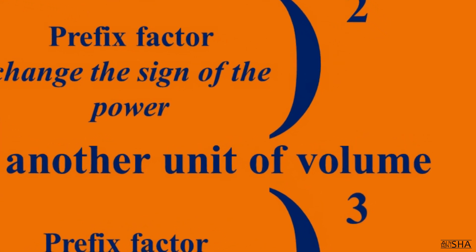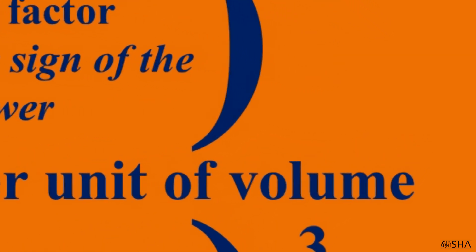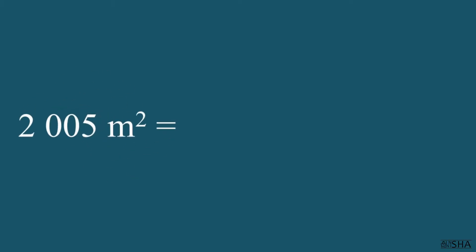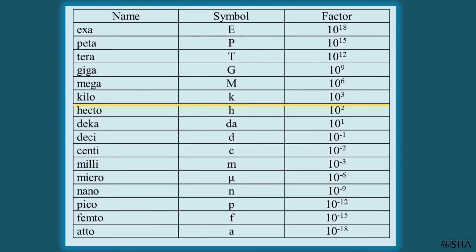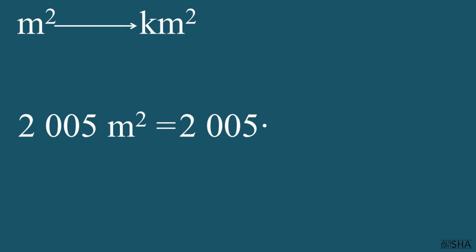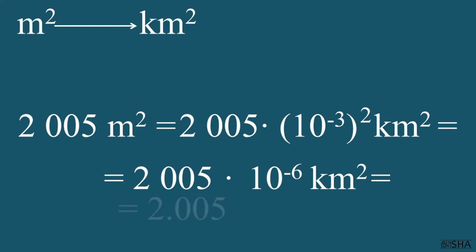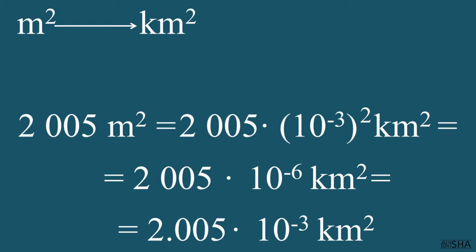Square units are squared and cubic units are cubed. What a great science! Convert 2005 square meters to square kilometers. We write 2005 without changes, change the factor's power sign of the prefix kilo to the negative, then we raise 10 to the negative 3rd power to the second power. We get 2005 times 10 to the negative 6th power square kilometers. In standard form, this number will look like 2.005 times 10 to the negative 3rd power square kilometers.